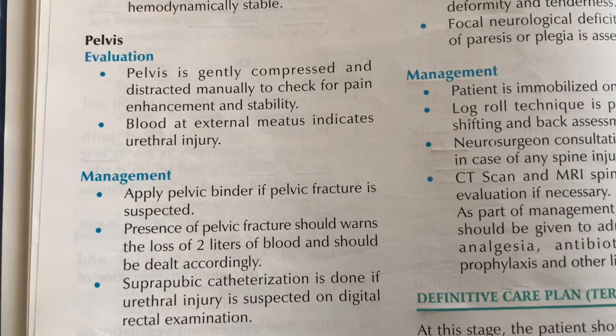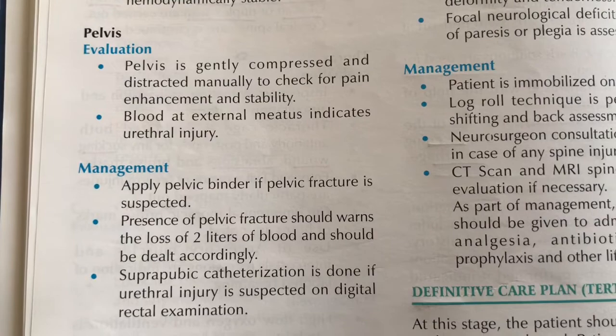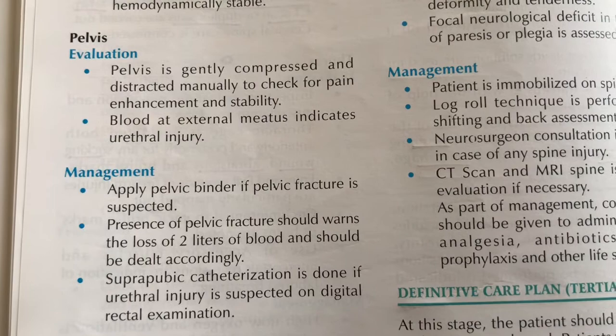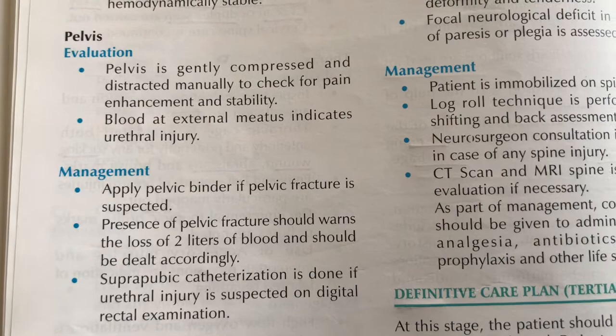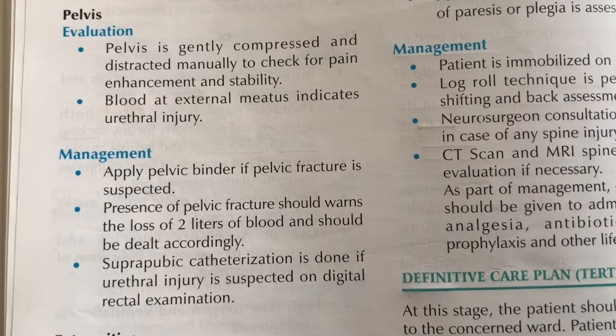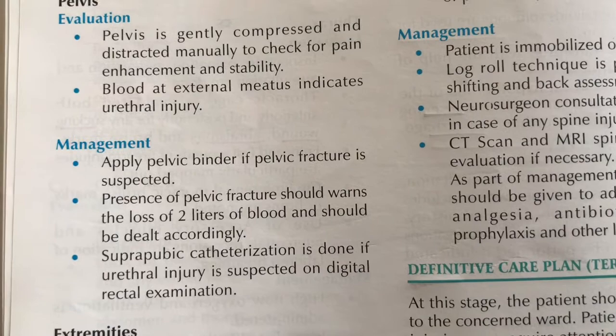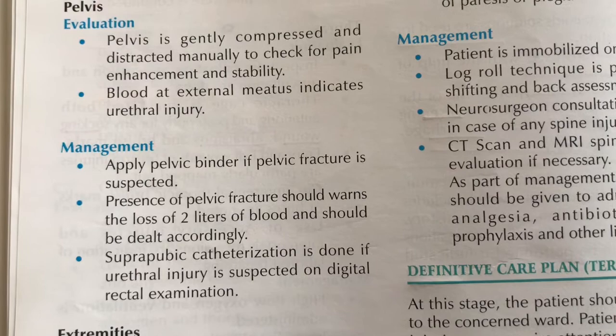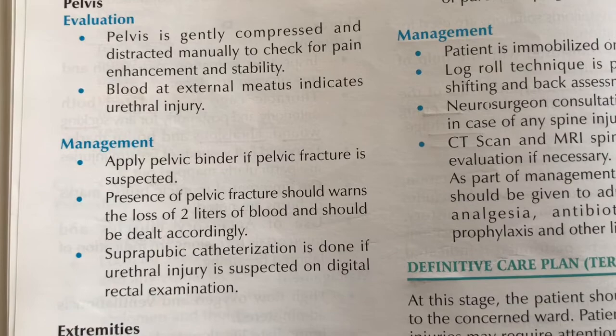Pelvis evaluation involves manual compression and distraction to check for pain and instability. Blood at the external urethral meatus indicates urethral injury. Management includes applying a pelvic binder if pelvic fracture is suspected, as pelvic fractures can be associated with up to 2 liters of blood loss. Catheterization is performed only after ruling out urethral injury on digital rectal examination.